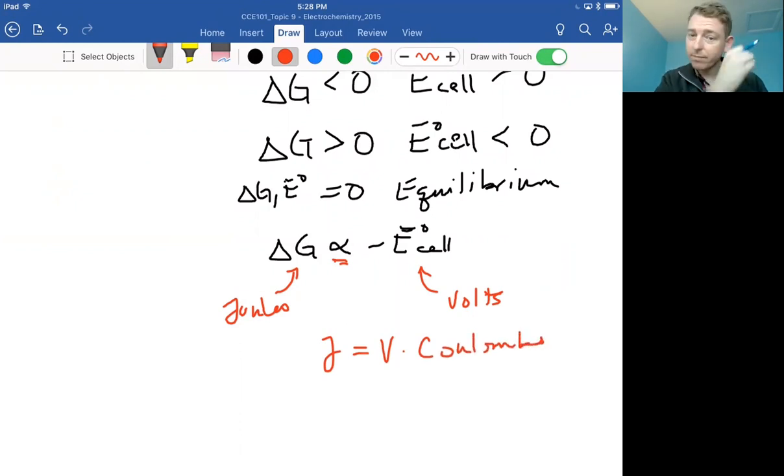Okay, so let's just stand that in already and we'll say that delta G is equal to negative Q—which is the standard for charge—multiplied by the standard cell potential in volts.